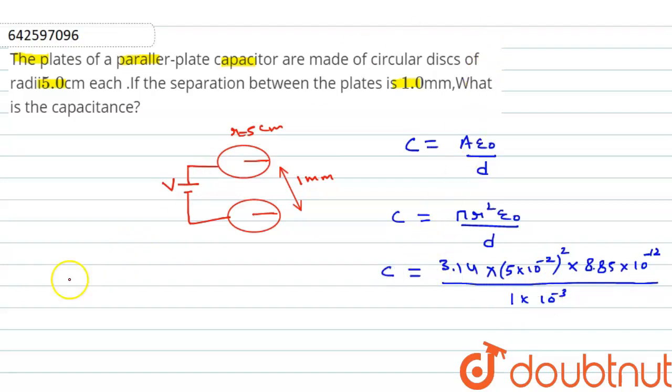After simplification, we get C equals 6.95 times 10 to the power minus 5 microfarad. Thank you, students.